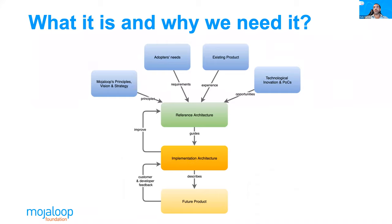This diagram shows where reference architecture is placed and how it must incorporate and understand not only the vision and the principles that drive the product and our platform, but also the requirements, the previous experience, and even closer to the technical innovation that must happen. This is a living document — it must be kept up to date. However, we never end up fully implementing that vision. It's always a target that we are constantly updating, and it should always reflect the desired future state.